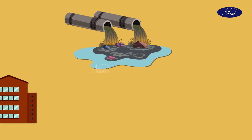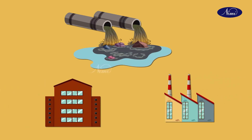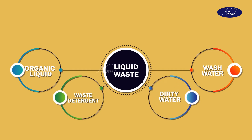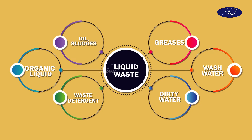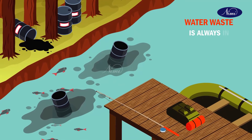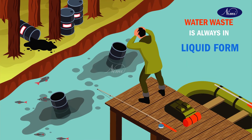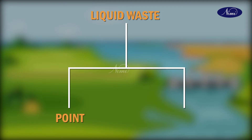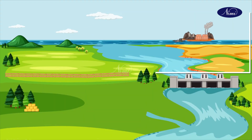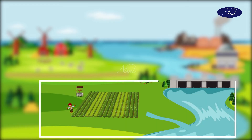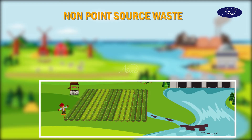Liquid waste is commonly found both in households and in industries. This waste includes organic liquids, wash waters, waste detergents, dirty water, greases, oil, and sludges that have been discarded. Liquid waste is any waste that exists in liquid form. It can be classified into point source waste — manufactured liquid waste — and non-point source waste, which is natural liquid waste.